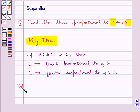Let's move on to the solution now. Let the third proportional to 4 and 8 be equal to X.